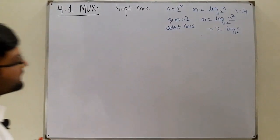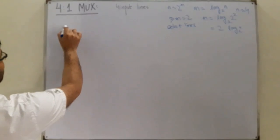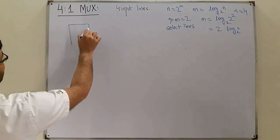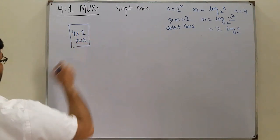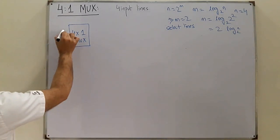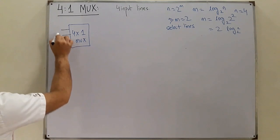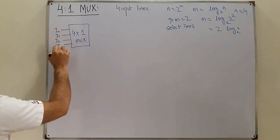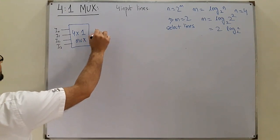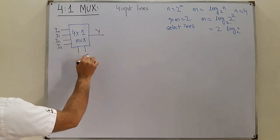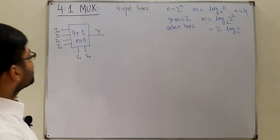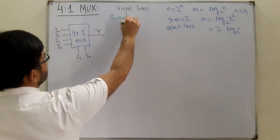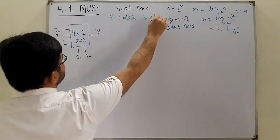Now drawing a general block diagram of this mux — we have 4 inputs: i0, i1, i2, and i3, a single output y, and 2 select lines s0 and s1. Note that s1 is the most significant bit and s0 is the least significant bit.